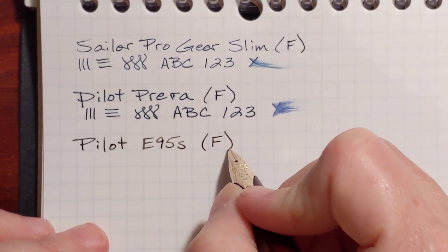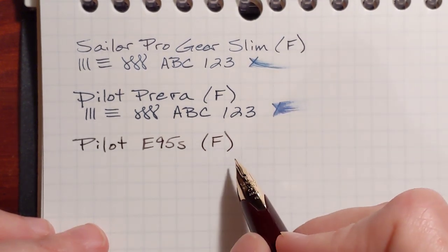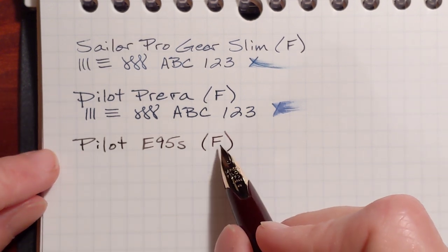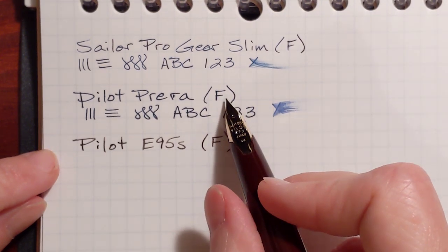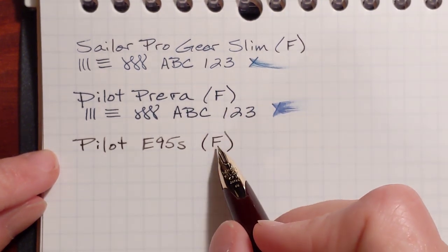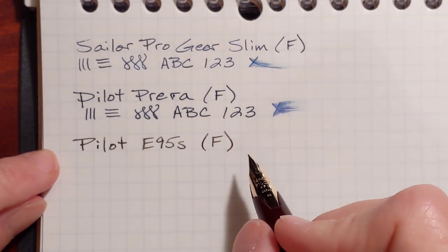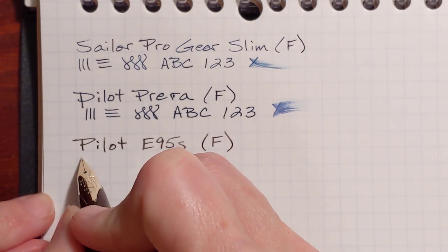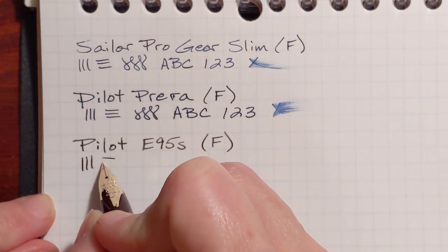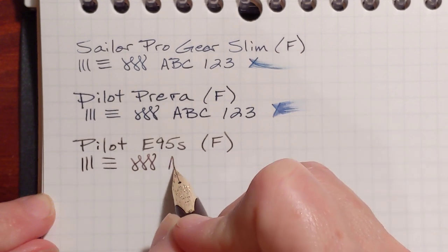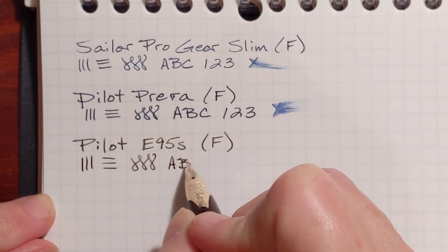I debated when I got this between getting the fine and the extra fine. And you see how this fine nib, it's writing a little bit wetter than, or broader, slightly broader, slightly wetter than the fine nib on the Prera. Now, one of the reasons, there are two main reasons that I pass this up on my list of favorite pens.